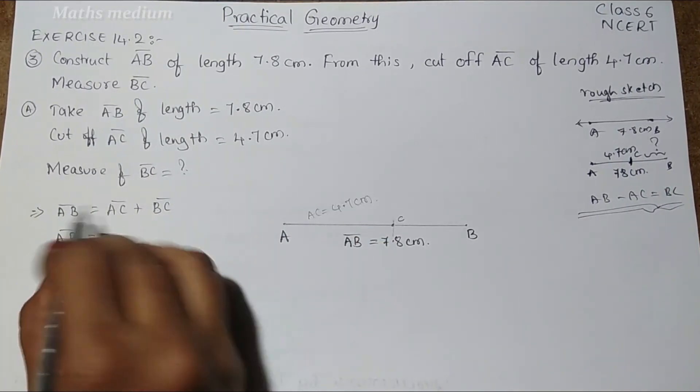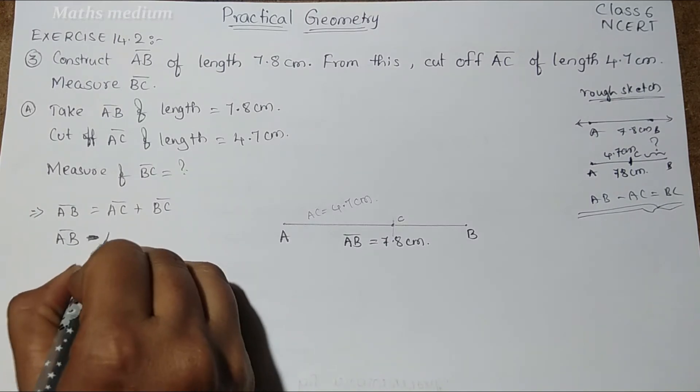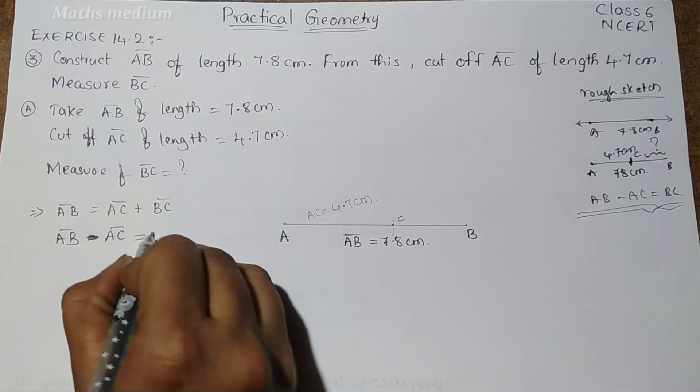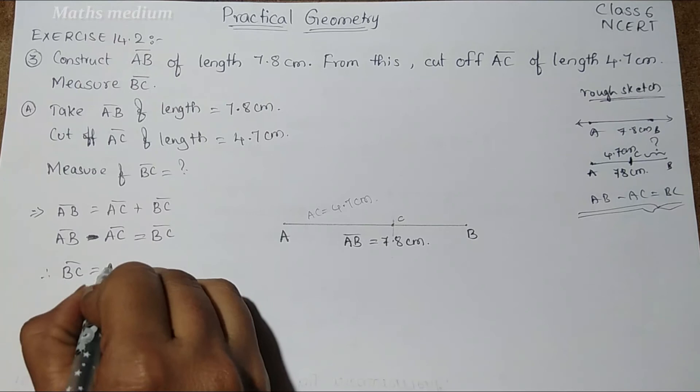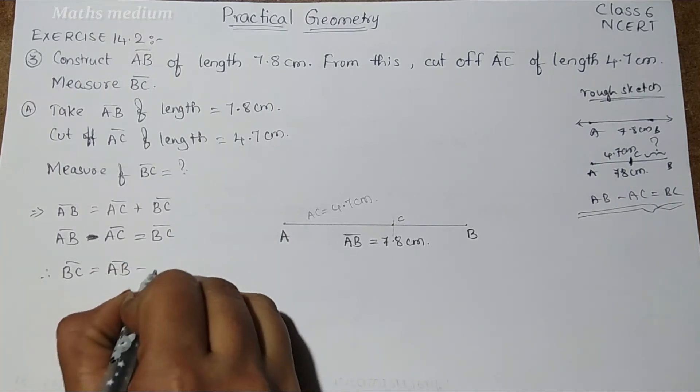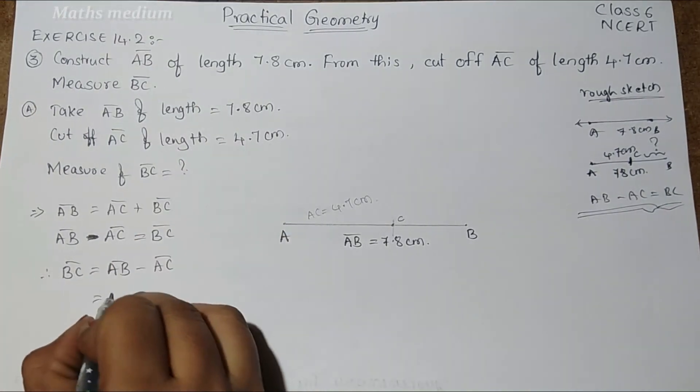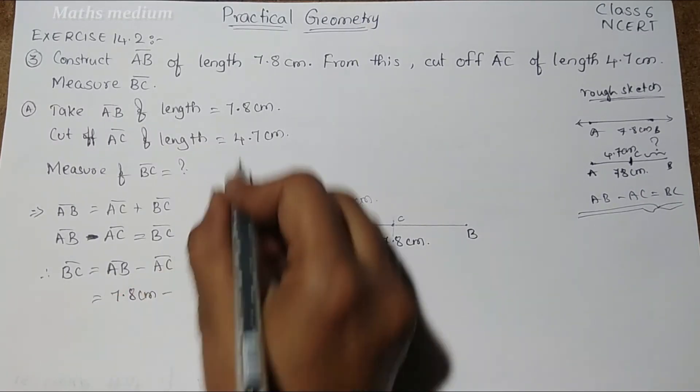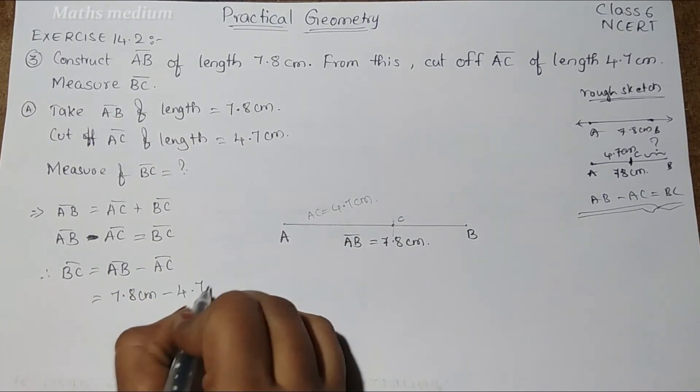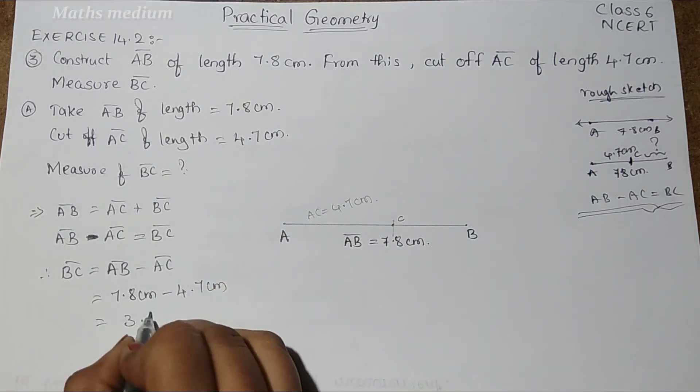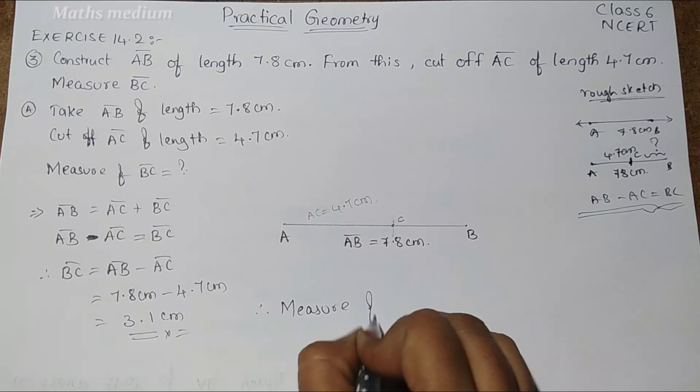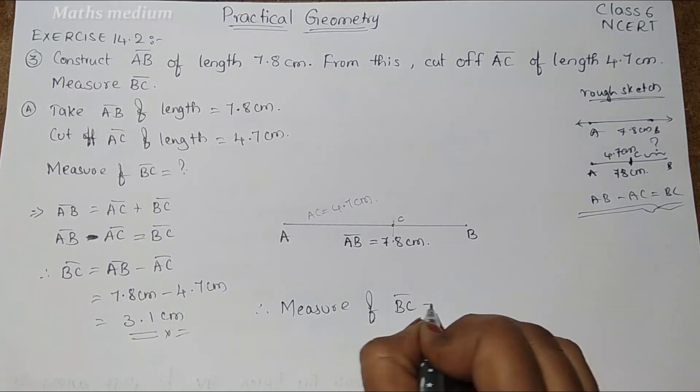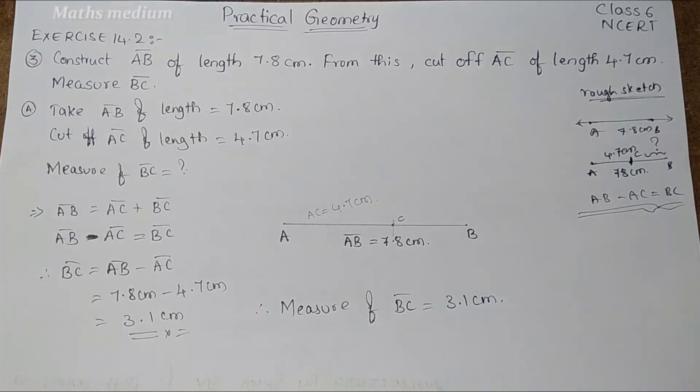AB bar minus AC bar coming to here, going to AC bar, it is minus equal to BC bar. Therefore, BC bar is equal to AB bar minus AC bar. AB is equal to 7.8 cm minus AC bar 4.7 cm. That goes to 3.1 cm.